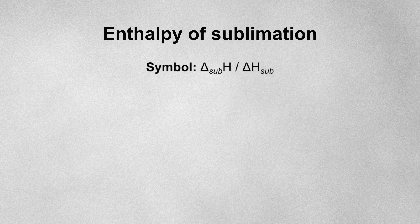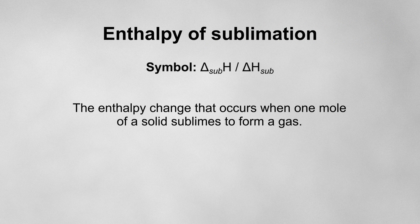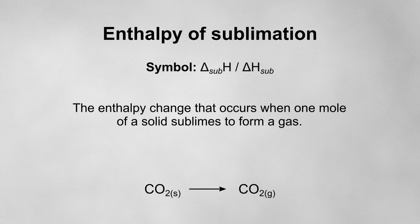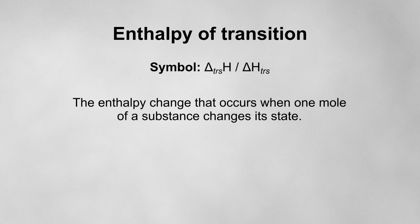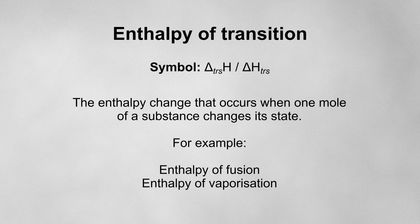The enthalpy of sublimation is the enthalpy change that occurs when one mole of a solid sublimes to form a gas — this is when a solid turns directly into a gas, skipping the liquid phase entirely. For example, this equation shows the enthalpy of sublimation for carbon dioxide. It is always positive because it requires energy to break the bonds between solid particles, so the process is endothermic. The enthalpy of transition is the enthalpy change that occurs when one mole of a substance changes its state; the enthalpy of fusion, vaporization, and sublimation are all examples of this.